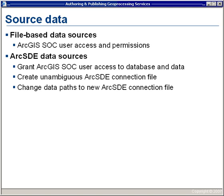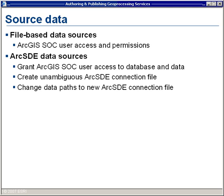The second item we need to examine when authoring a geoprocessing service is the source data. Source data comes in two forms: file-based data sources such as shapefiles, file-based geodatabases, or personal geodatabases running on Microsoft Access. If you're going to use a file-based data source, you need to make sure the ArcGIS SOC user has access and permissions to that data. Remember, geoprocessing services run as the ArcGIS SOC user.